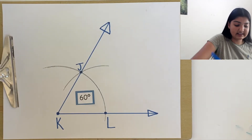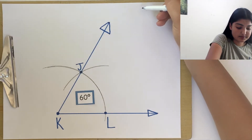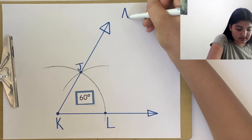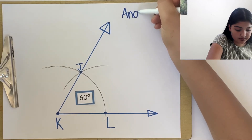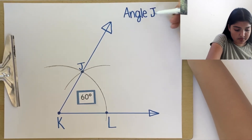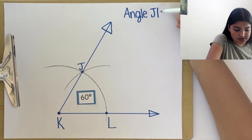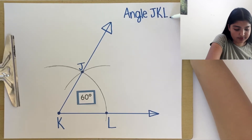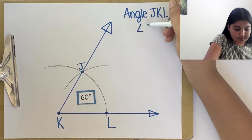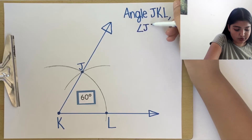We can write it as angle J, K, L, or by using the angle symbol.